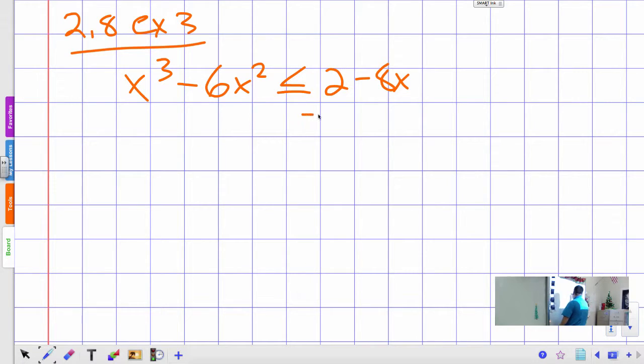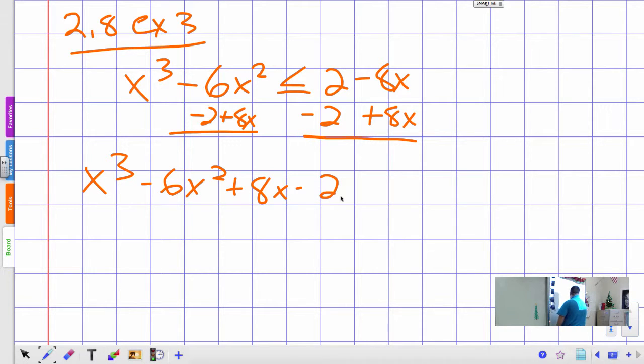First thing I'm going to do is set this equal to zero. I'm going to subtract two and add eight x to both sides. That gives me x cubed minus six x squared plus eight x minus two is less than or equal to zero.